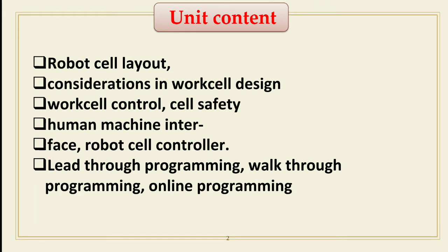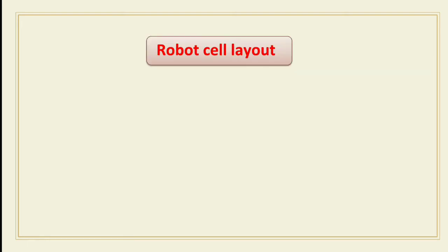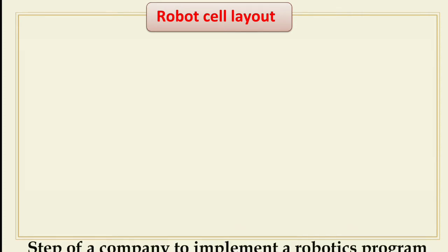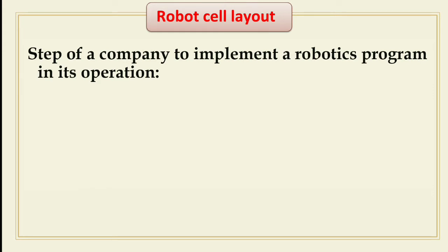The first topic is robot cell layout. In a robot work cell, the industrial robot generally works with other pieces of equipment. These pieces of equipment include conveyors, production machines, fixtures, and tools. The robot and associated equipment form the work cell. The term workstation or machine station can also be used, but this term is generally limited to a work cell with a single robot or multiple robots.